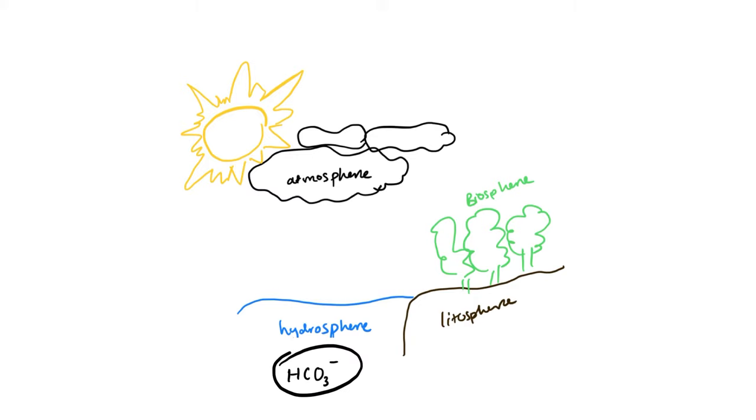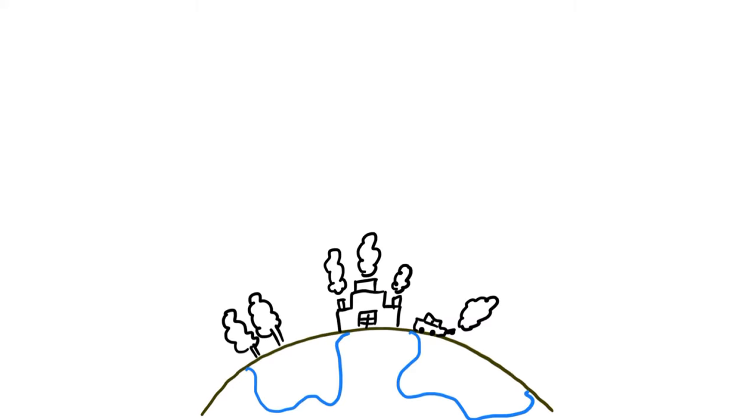Carbon exists as hydrogen carbonate in the rocks, as carbon dioxide in the oceans and atmosphere, and as carbon monoxide in the atmosphere. Keep in mind that the carbon within the atmosphere, hydrosphere, and lithosphere is in a balanced form and in equilibrium.